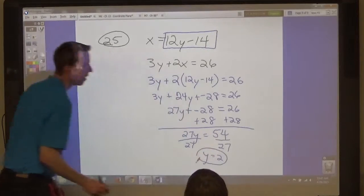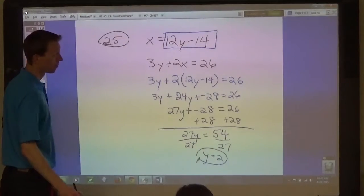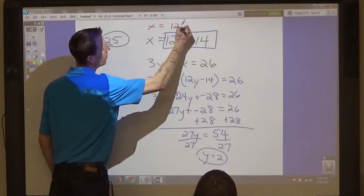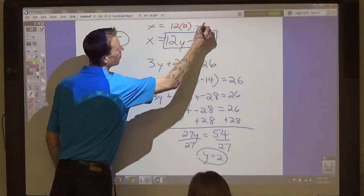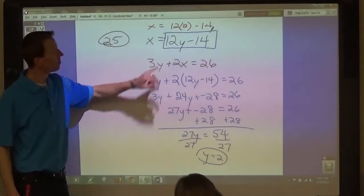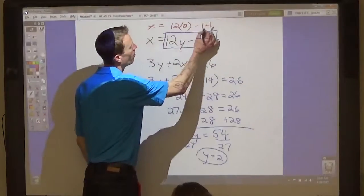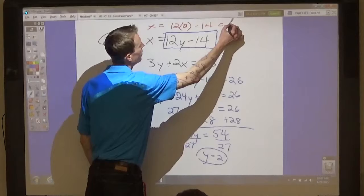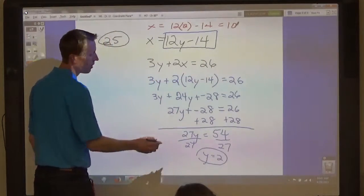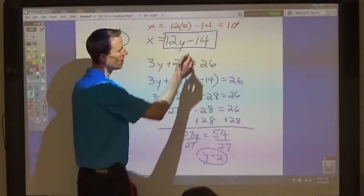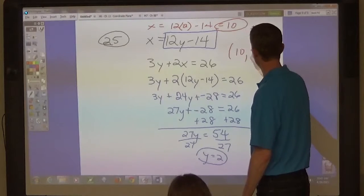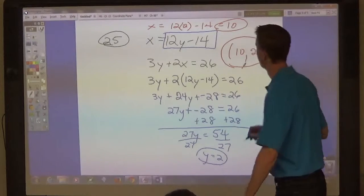So if y equals 2, then let's find x. X equals 12 times 2 minus 14. 24 minus 14, and x equals 10. So write the solution. Always write the solution. Don't just leave them sitting there somewhere. 10, comma, 2.